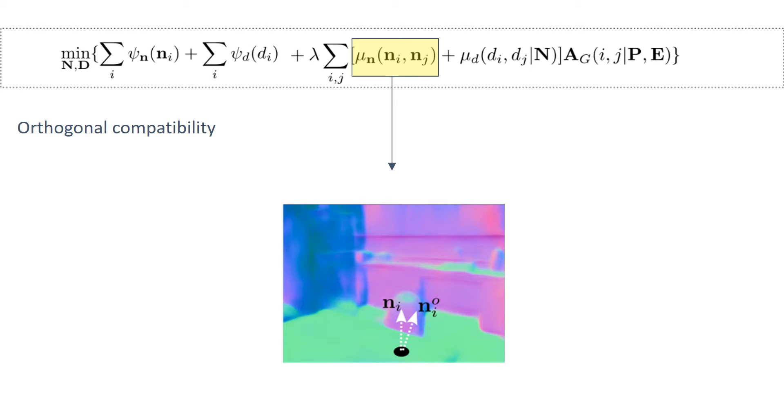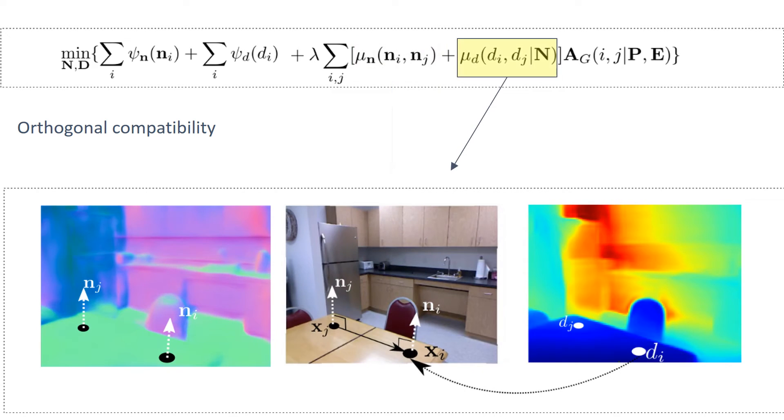For the compatibility term of normal, we measure the inner product distance between any neighboring normals, which asks the normals in the same planar surface to have the same value. However, for the depth compatibility given two pixels, we back-project their depth values into 3D space and require the difference vector between the two pixels is orthogonal to both predicted normals ni and nj. This asks the depth in the same planar surface to follow the 3D planar function.